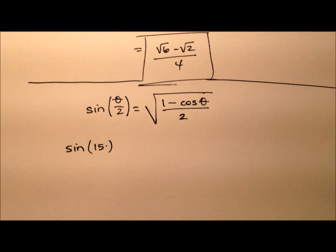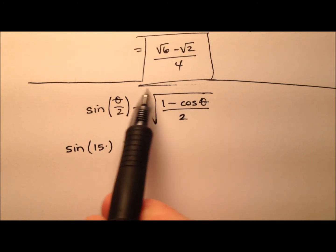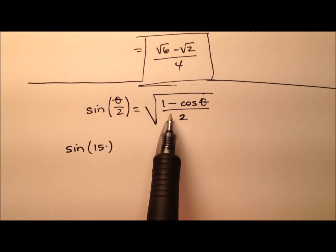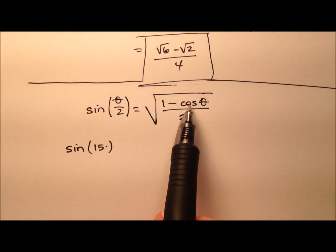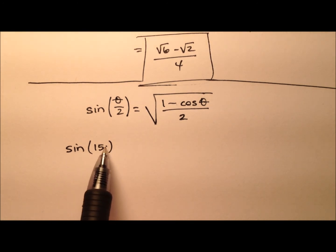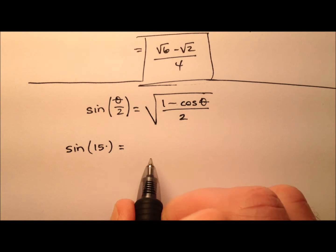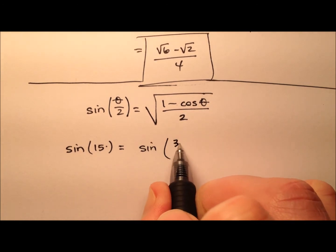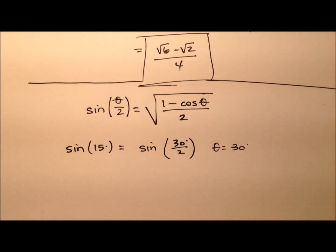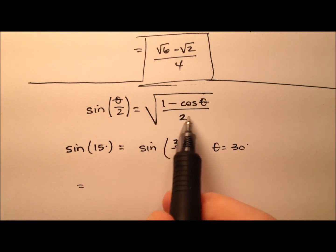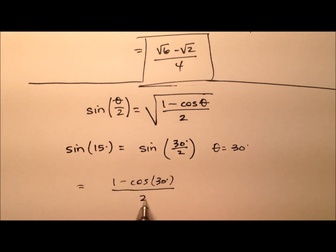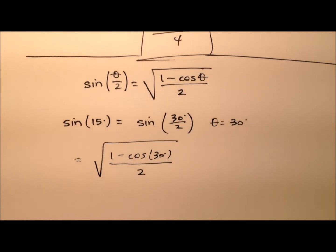Now let's work this again using the half angle identity. The formula is: sine of θ/2 equals the square root of (1 minus cosine θ) all divided by 2. If we're using the sine of 15 degrees, I can rewrite that as the sine of 30 degrees divided by 2, which suggests that our θ is 30 degrees. So applying this formula, it'll be the square root of (1 minus cosine of 30 degrees) all divided by 2.